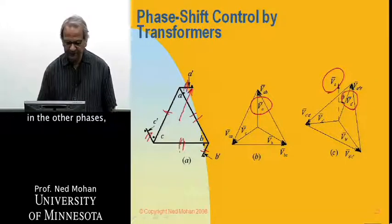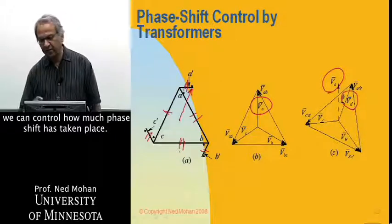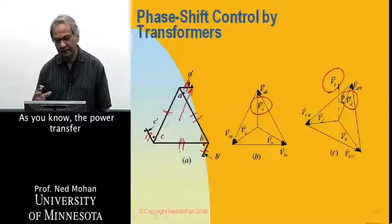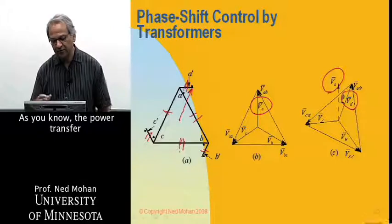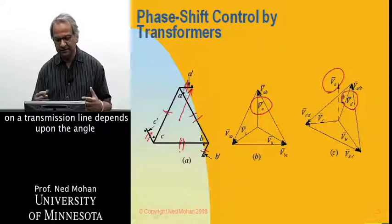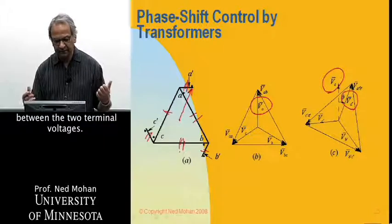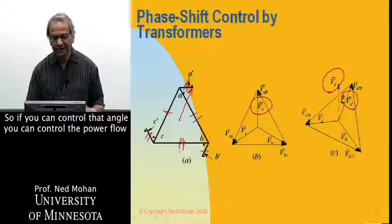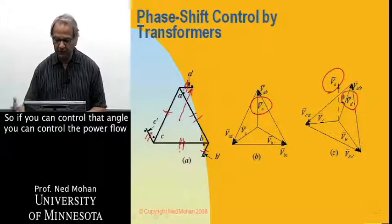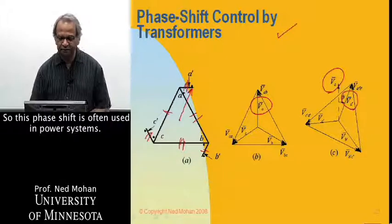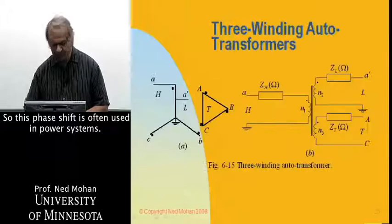So we can create this phase shift, and depending upon the number of turns between this winding and this winding, and similarly in the other phases, we can control how much phase shift is taking place. And as you know, the power transfer on a transmission line depends upon the angle between the two terminal voltages. So if we can control that angle, we can control the power flow on a given transmission line. So this phase shift is often used in power systems.